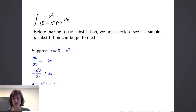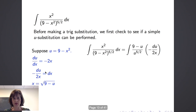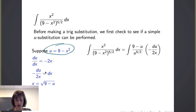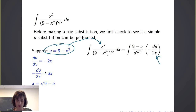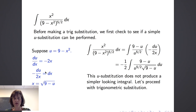Making those substitutions, the numerator x squared becomes 9 minus u, giving us 9 minus u over u to the 5 halves power times negative du over 2x. Since we have an x in the denominator, solving u equals 9 minus x squared for x gives x equals the square root of 9 minus u. This results in negative one half times the integral of 9 minus u over u to the 5 halves times the square root of 9 minus u du, which is not a simpler integral. So let's proceed with trig substitution.